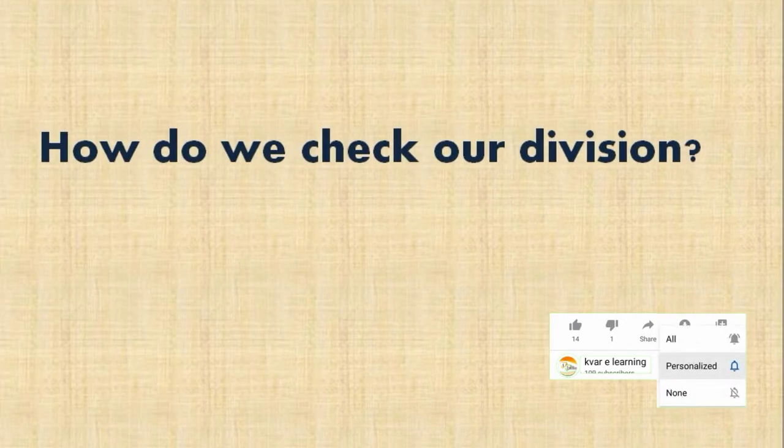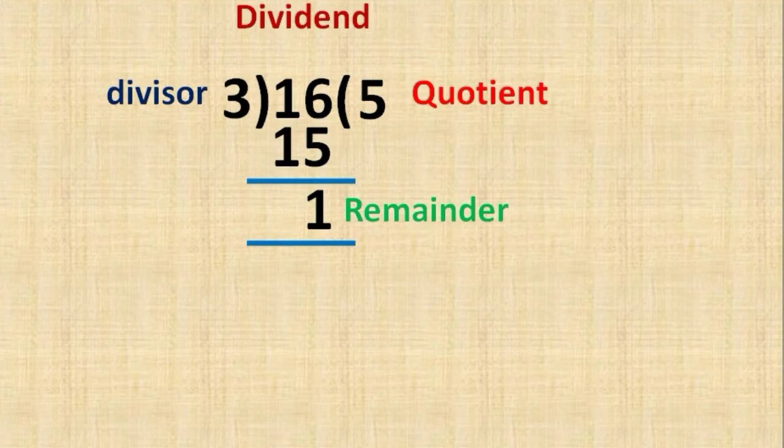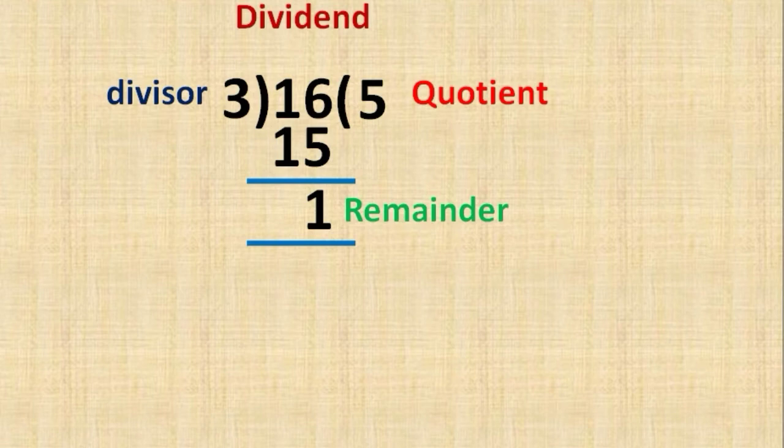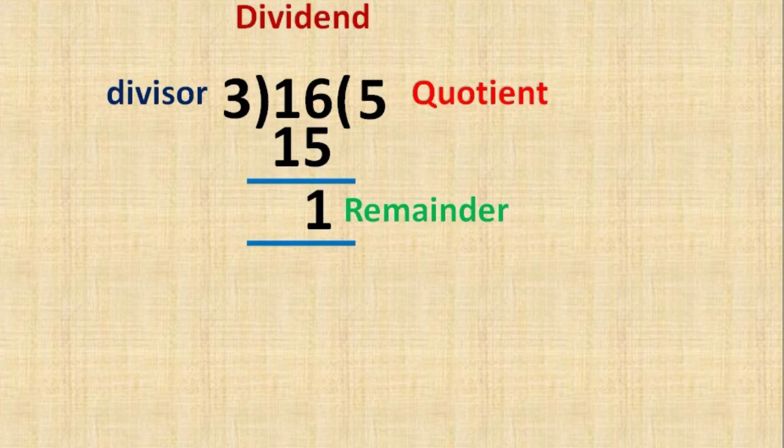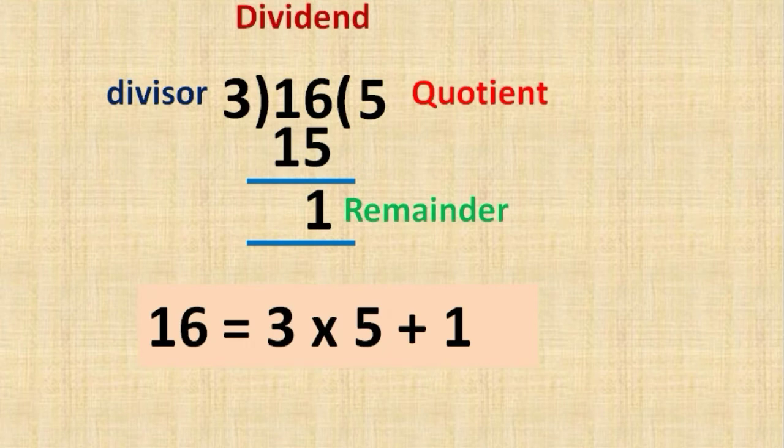Now the third question: How do we check our division is right or wrong? To verify, total objects 16 equals 3 into 5 plus 1. There are three groups, each group has 5 objects, plus 1 object is the remainder. So 3 times 5 is 15 plus 1 is 16. I will check this.